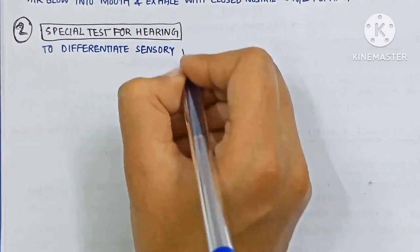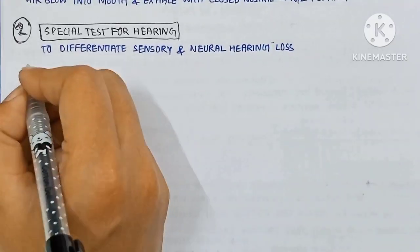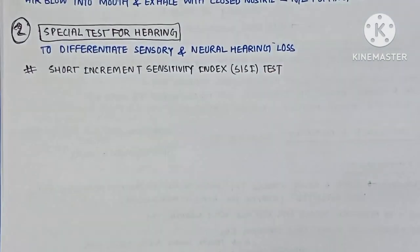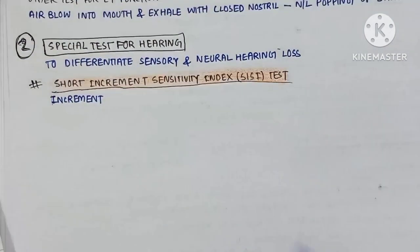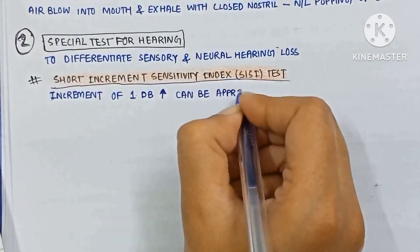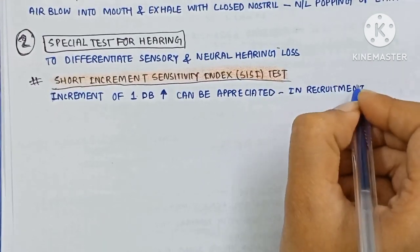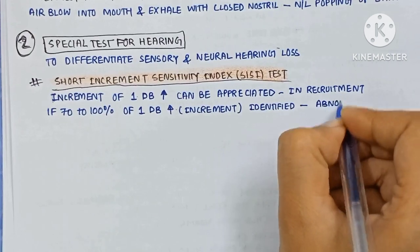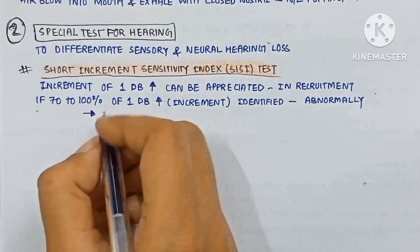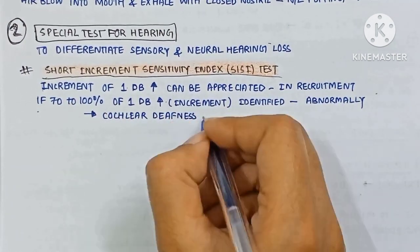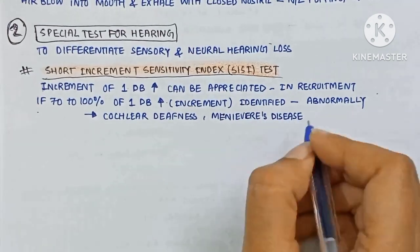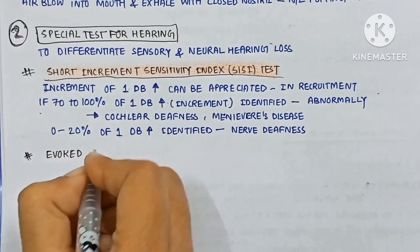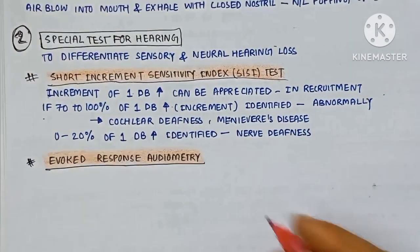Special tests for hearing to differentiate sensory and neural hearing loss. First is the Short Increment Sensitivity Index (SISI) test: an increment of 1 dB increase that can be appreciated indicates recruitment. If 70 to 100 percent of the 1 dB increments are identified, it is abnormal and indicates cochlear deafness such as in Meniere's disease. Zero to 20 percent identified indicates nerve deafness.